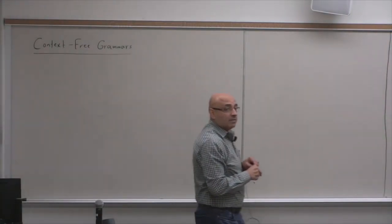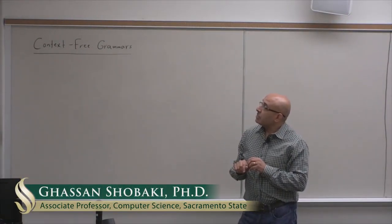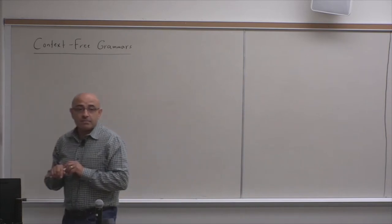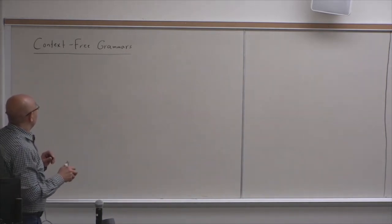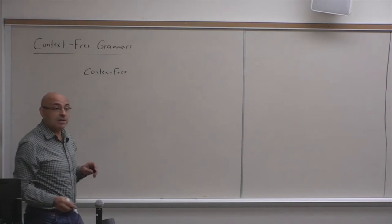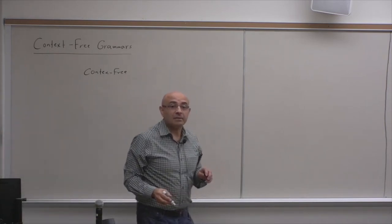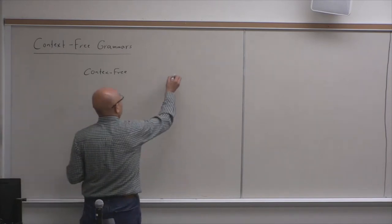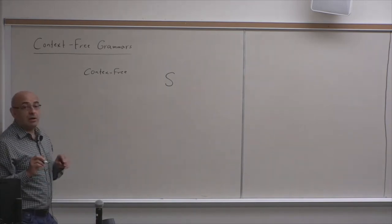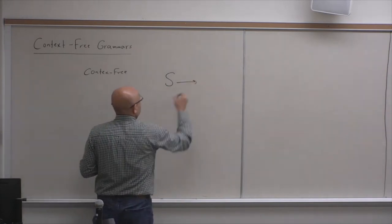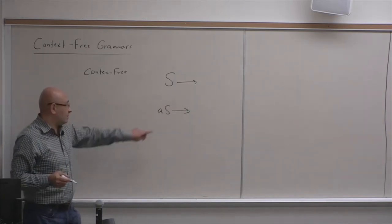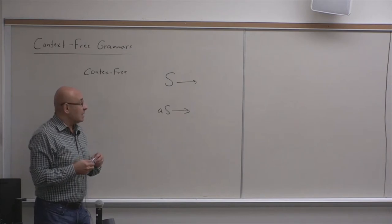Today we'll be talking about context-free grammars again. Last time we introduced the concept of a context-free grammar and went through some examples. What does context-free mean? It means you can have only one variable on the left-hand side — that's the only kind of grammar we cover in this course. If you have something like AS on the left, that's context-sensitive, which we will not be covering.